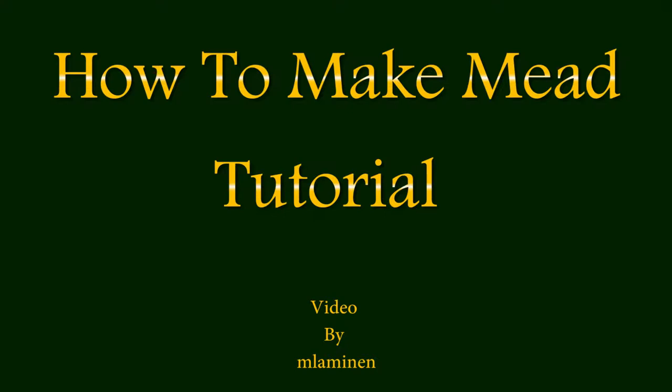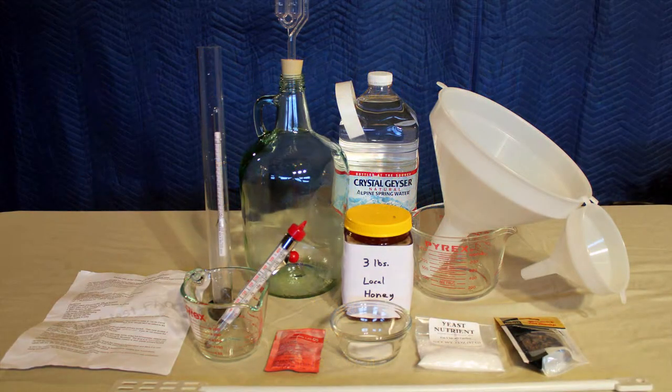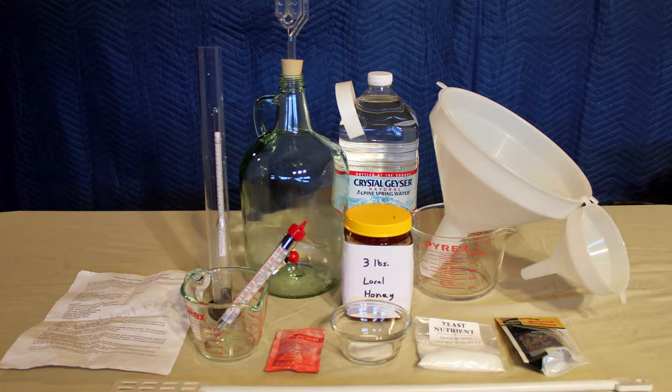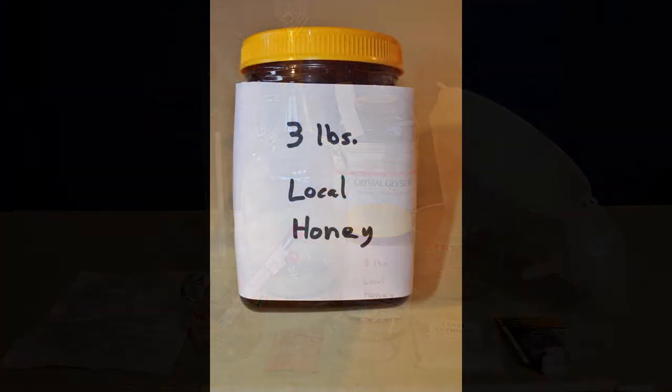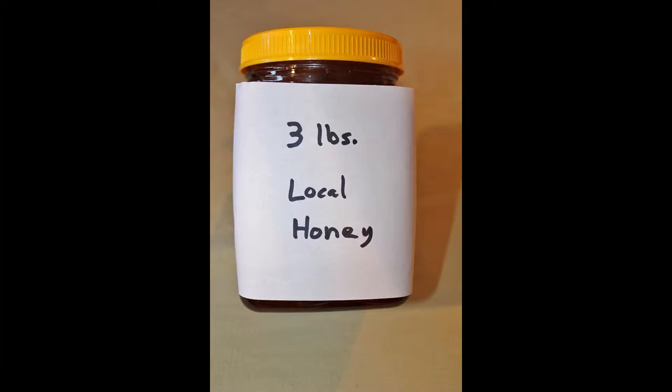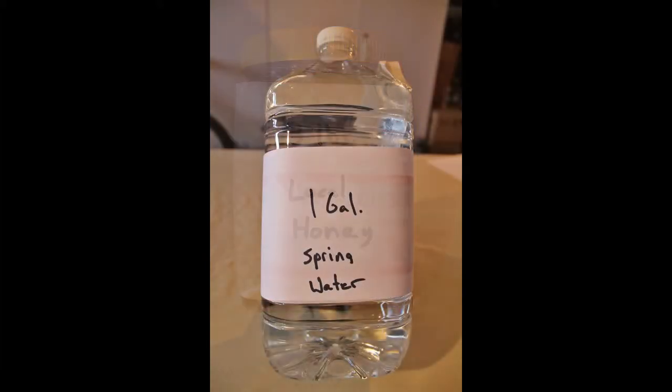Hello and welcome. This tutorial is how to make basic mead, also known as honey wine. Here is some of the equipment you will need to make your mead. The most important item is the honey. For a one gallon batch, which is what we are going to be making today, you will need three pounds preferably local honey. You will need one gallon of spring water.